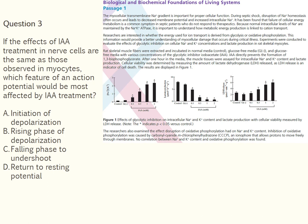The third question reads: 'If the effects of IAA treatment in nerve cells are the same as those observed in myocytes, which feature of an action potential will be most affected by IAA treatment?' The correct answer is D. This question requires recalling the role of the sodium pump in recovery of the nerve cell resting potential after an action potential, and reasoning about how inhibition of glycolysis by IAA would affect cellular ATP concentration. Based on these two lines of reasoning, the test taker can propose a hypothesis about which portion of an action potential would be affected. At the end of this section, you will be given an optional 10-minute break — we recommend taking your breaks to avoid needing a bathroom break mid-section, as you cannot stop the timer.